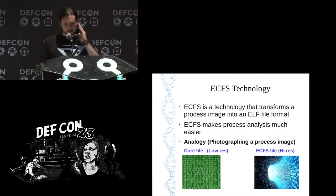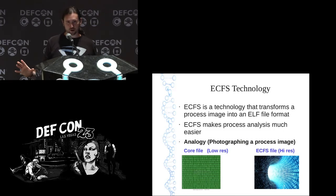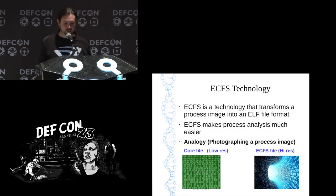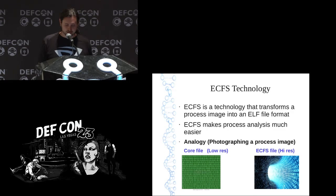ECFS technology can either snapshot a process while keeping it running — giving you an ECFS core file of it — or it can hook into the core handler and essentially transform the core file into a very special type of core file specifically for this type of analysis. The analogy is that a regular core file is a monochrome image of a process — flat zeros and ones — while the ECFS file is the high resolution version of that.